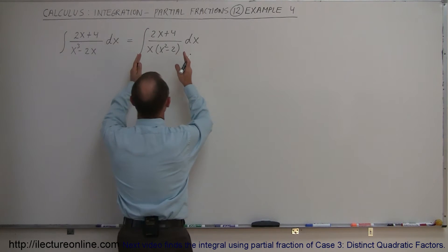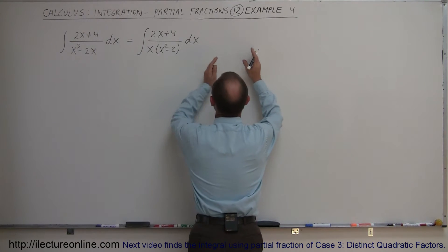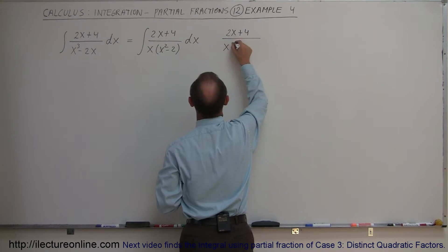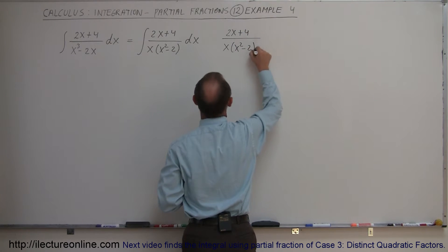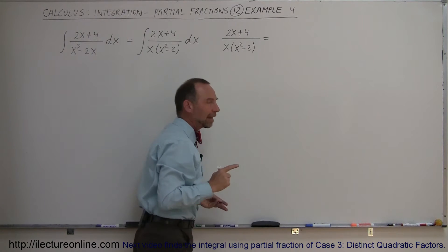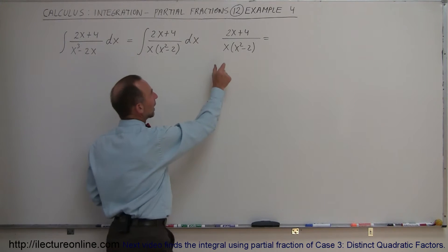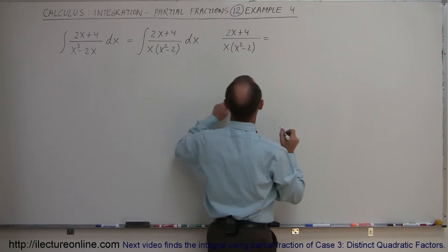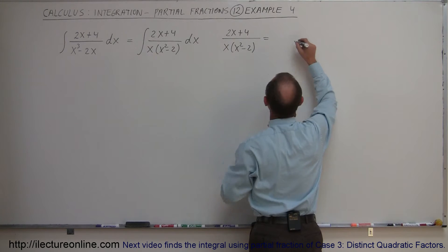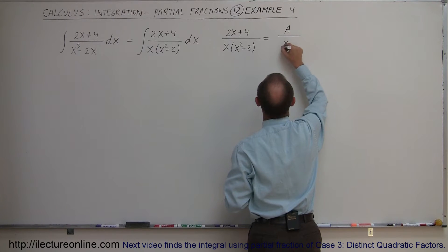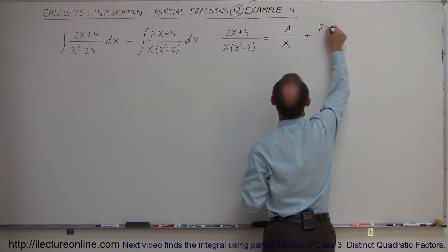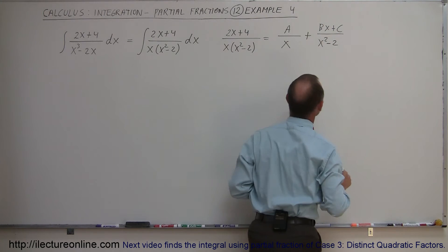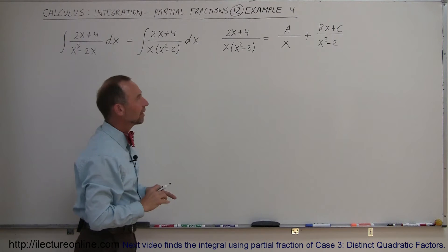We're going to take the integrand — 2x plus 4 divided by x times x squared minus 2 — and write it as the sum of two fractions, since we have a product of two factors. Since the second factor is a quadratic, this becomes a over x plus bx plus c over x squared minus 2. That's a little bit different from the ones we did before.